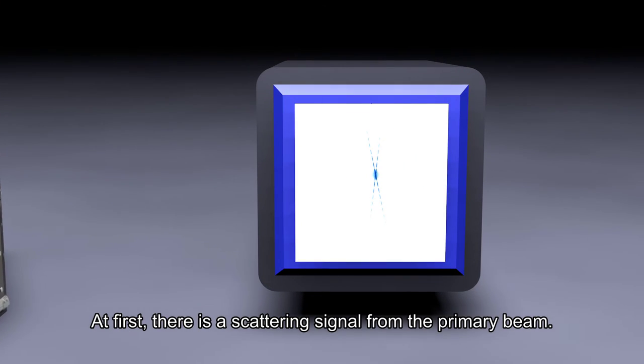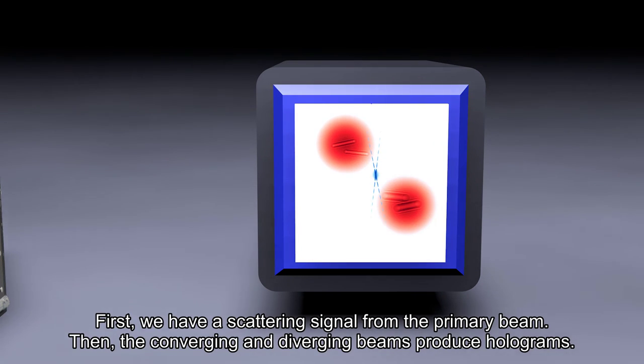At first there is a scattering signal from the primary beam. Then the converging and diverging beams produce holograms.